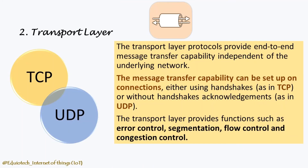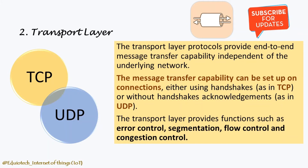The transport layer protocols provide end-to-end message transfer capability independent of the underlying network. The message transfer capability can be set up either using handshakes as in TCP, or without handshake acknowledgements as in UDP. The transport layer provides functions such as error control, segmentation, flow control, and congestion control.